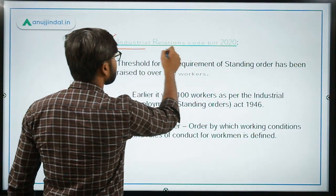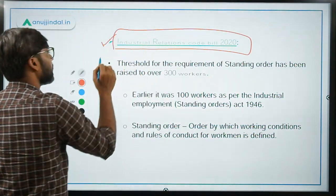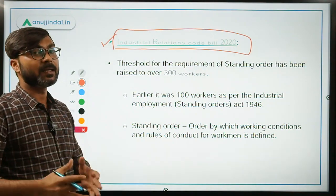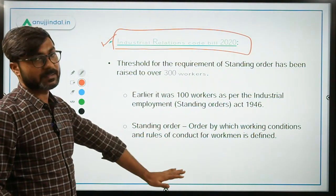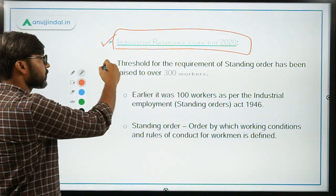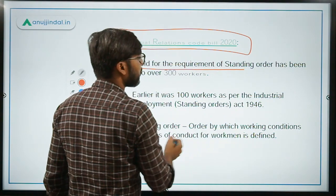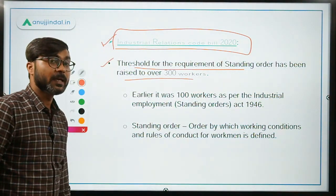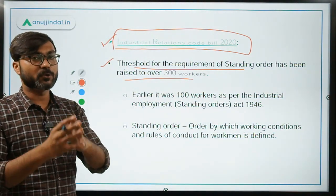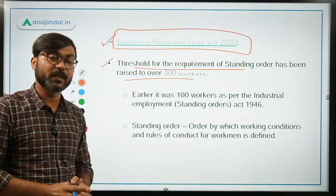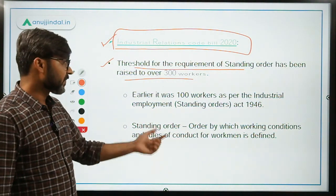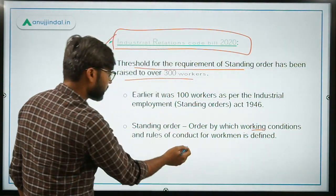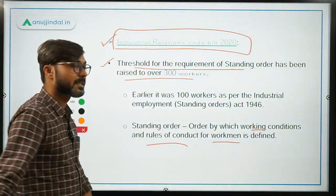Let us first discuss the Industrial Relations Code Bill 2020. It is quite similar to the 2019 version, with some changes that we will discuss. The first change is that the threshold for the requirement of a standing order has been raised to over 300 workers. A standing order is something that industrial establishments have to create. It is basically an order by which the working conditions and rules of conduct for workmen are defined.